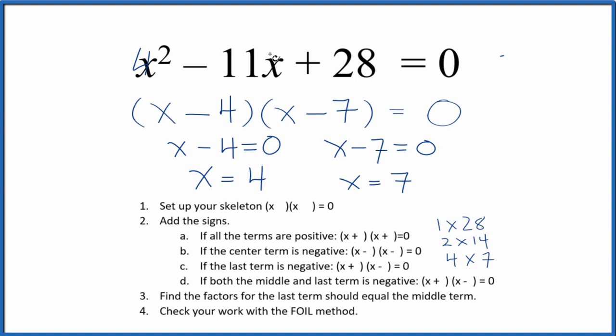So if you put 4 in for x and you did the math, this would all end up equaling zero. Likewise, if you put 7 in for x and did the math, all of this would equal zero. So we did this part correctly.